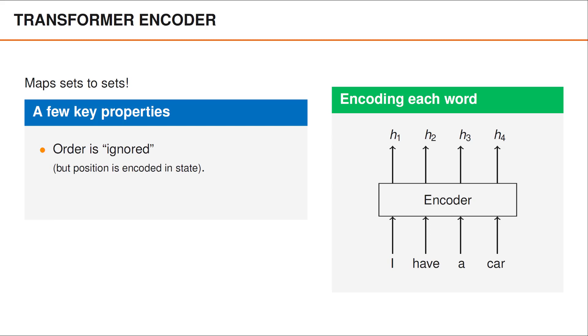Specifically, the encoder doesn't actually care about how the input vectors are ordered. This may be a reasonable property for languages, since words can often be reordered without substantially changing the meaning of the sentence. Note that this is very different compared to how CNNs work, where the weights are defined as a function of the relative position.